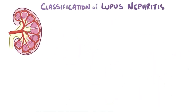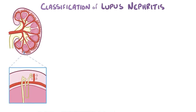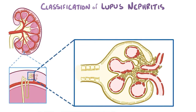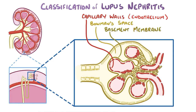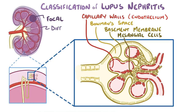Lupus nephritis is classified into various types depending on the exact site of these immune complexes and subsequent inflammatory reaction. The most common site of deposition is just underneath the capillary wall, also known as the endothelium. But deposits can also be within the Bowman space of the nephron, the basement membrane, or near the mesangial cells. The extent of inflammation within the kidney can be focal, involving nephrons in just one area, or diffuse, involving almost all the nephrons in both kidneys.